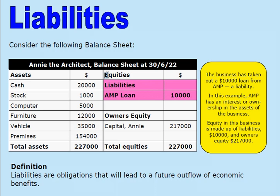So equities, in this more realistic example, is made up of both liabilities — that's obligations to external parties — and also the equity held by the owner. Equities is normally made up of both liabilities and owner's equity.